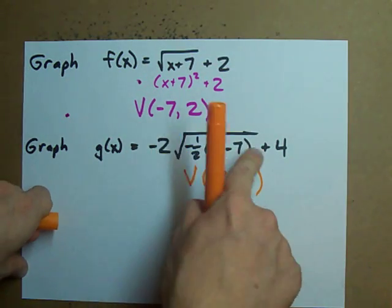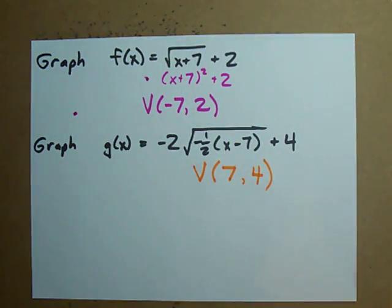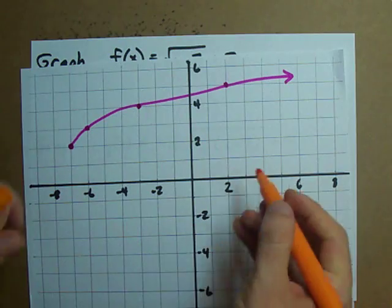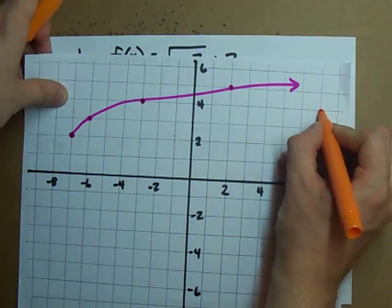The vertex here is at positive seven positive four. Positive seven positive four. Flip the sign here keep that sign the same. We can plot that vertex straight off. Seven and positive four. It's all the way up here.